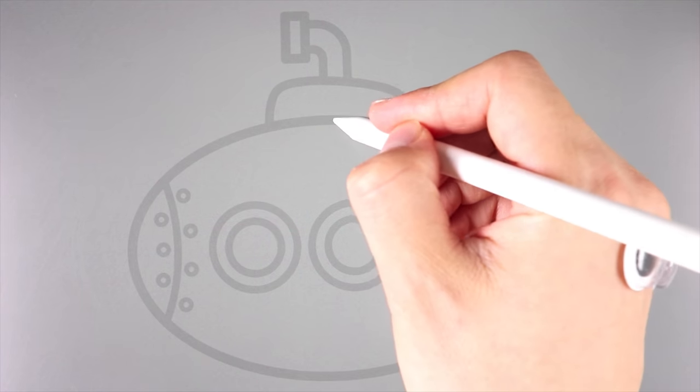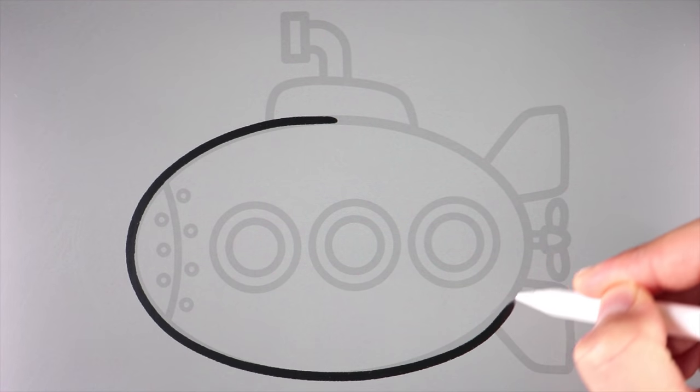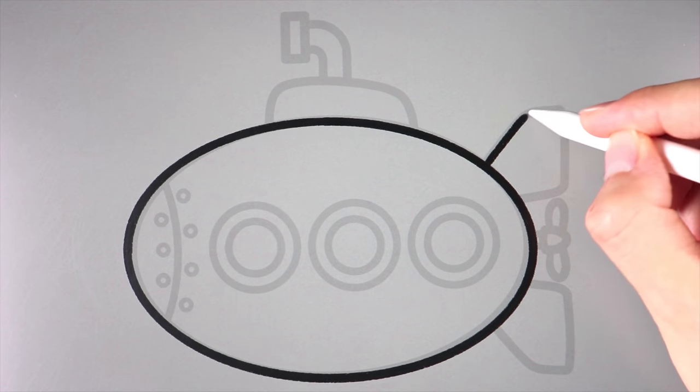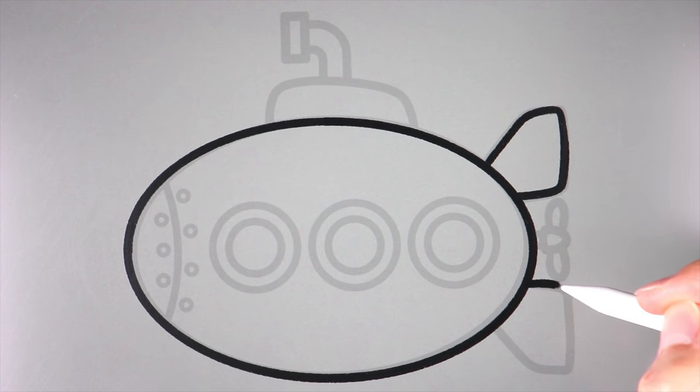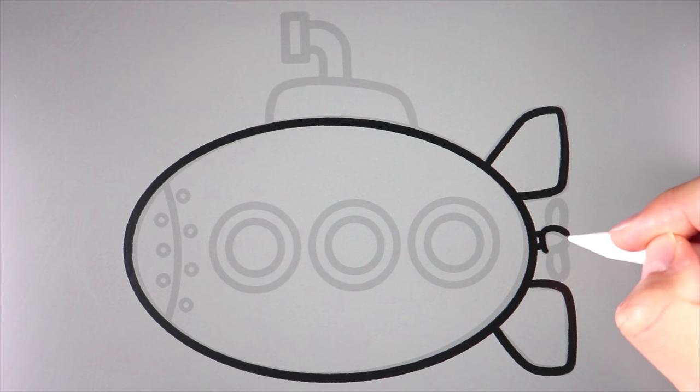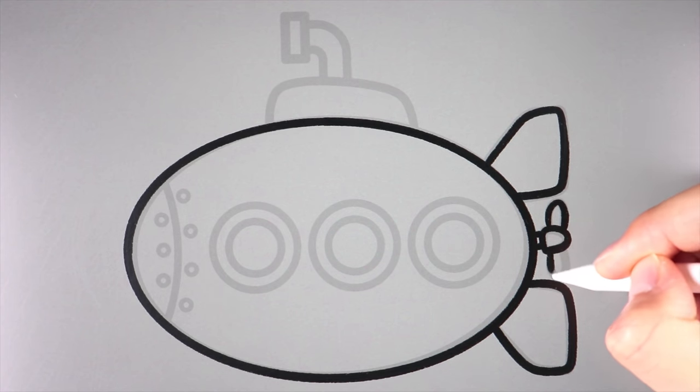To draw a submarine, let's draw a big oval first. And two tail-like things called rudders, one on the top and one in the bottom. There's a small propeller that makes the submarine go forward in the water.